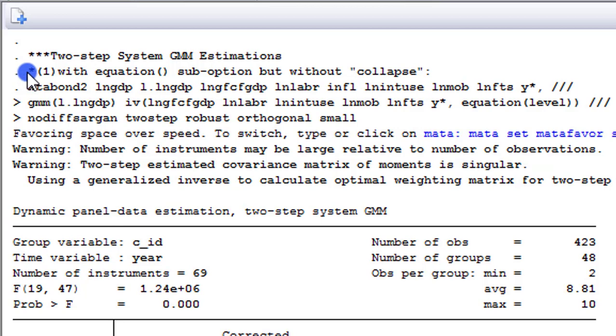Okay, so let us begin with the first simulation with the equation sub option, but without the collapse option. So by now, you have a good idea of how your result will turn out if you don't use the collapse option. So this is the syntax that was executed. And because we are using the two-step, I have the two-step option here. And at the top of the table, you can see this is a two-step system GMM output. So we are running the correct estimation.